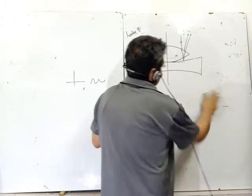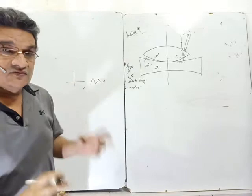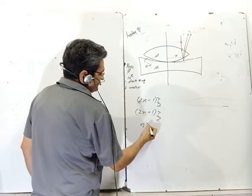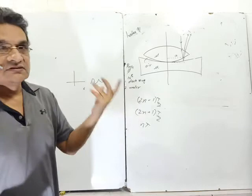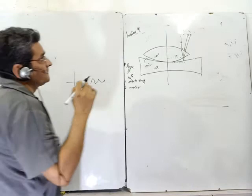In Newton's rings problems, we often get confused about which formula to apply — whether it is (2n−1)λ/2 or (2n+1)λ/2 — and what value of n to use for the 10th ring, 11th dark ring, or 4th bright ring. I'll cover that crucial aspect, because making a mistake there makes the whole answer wrong.